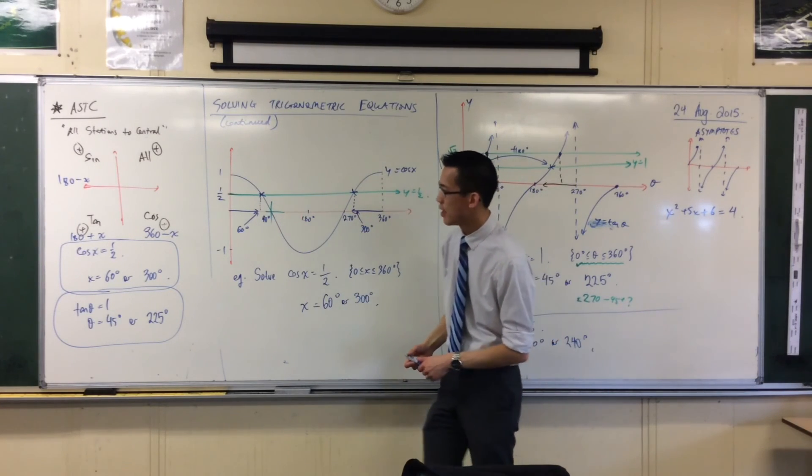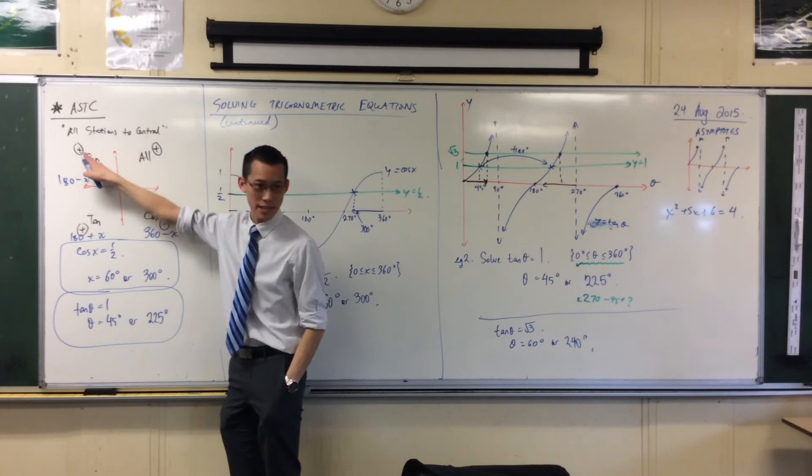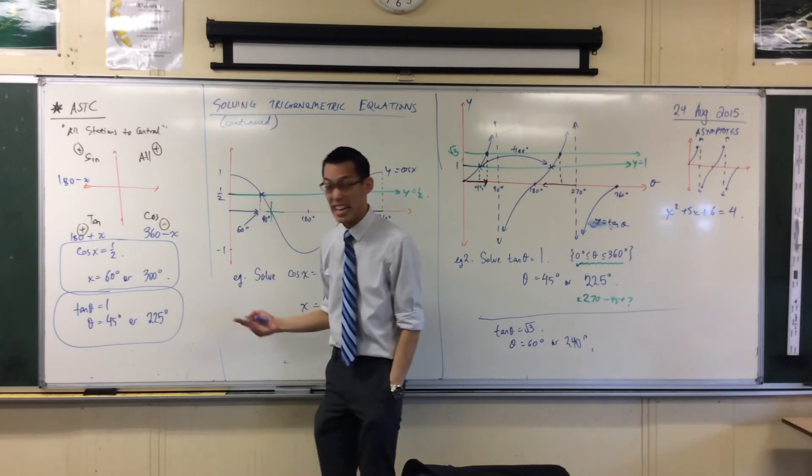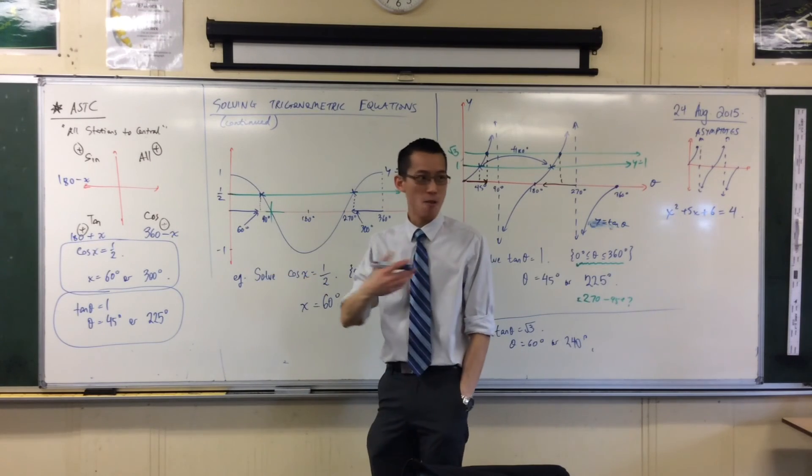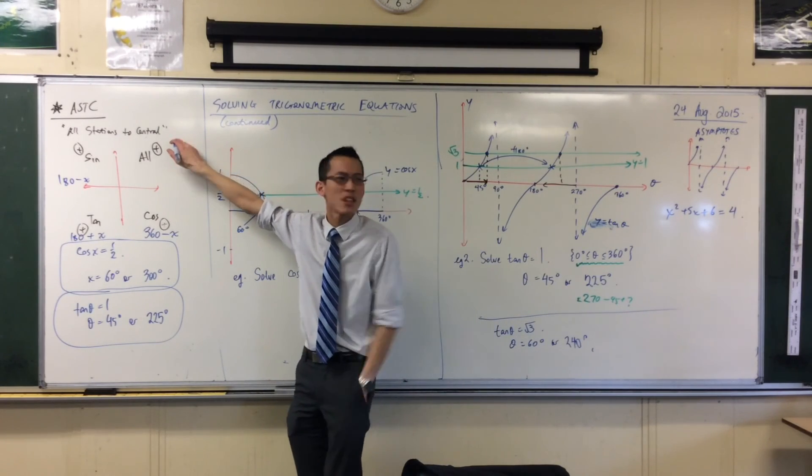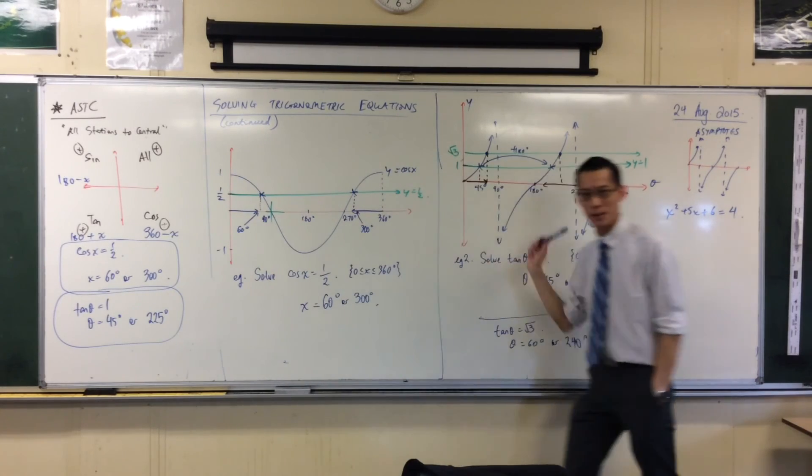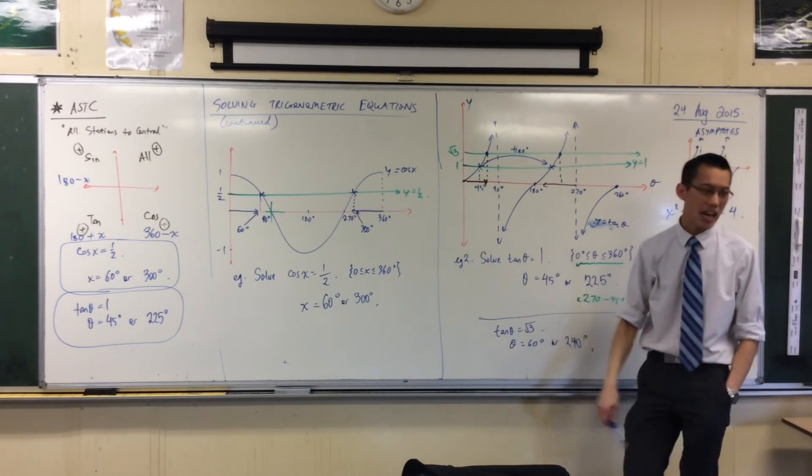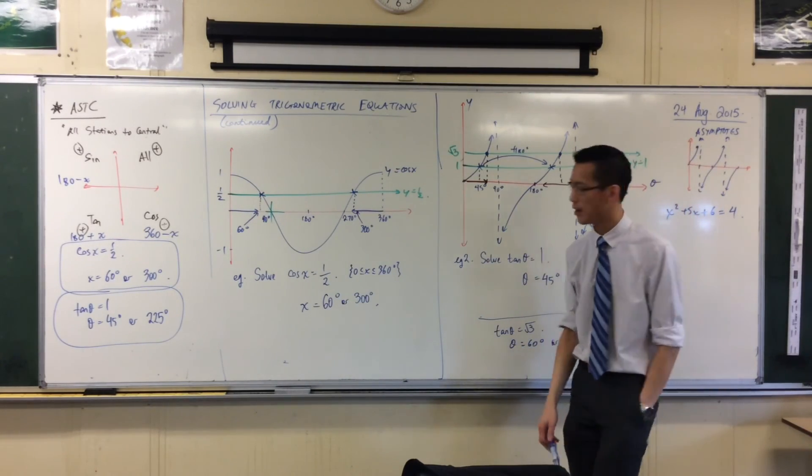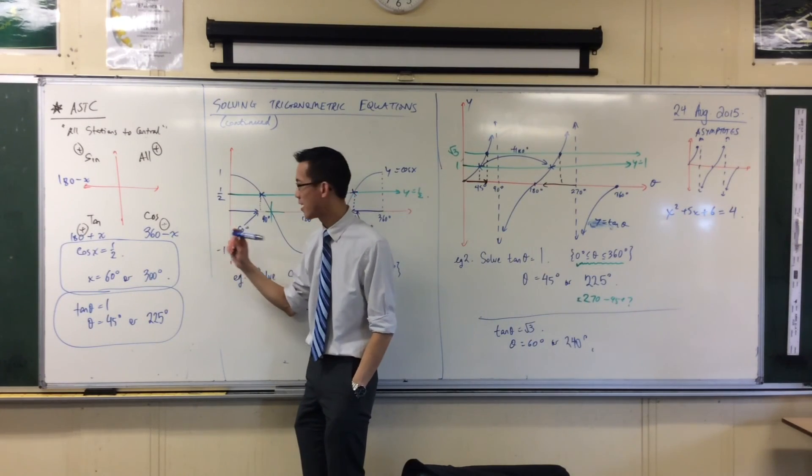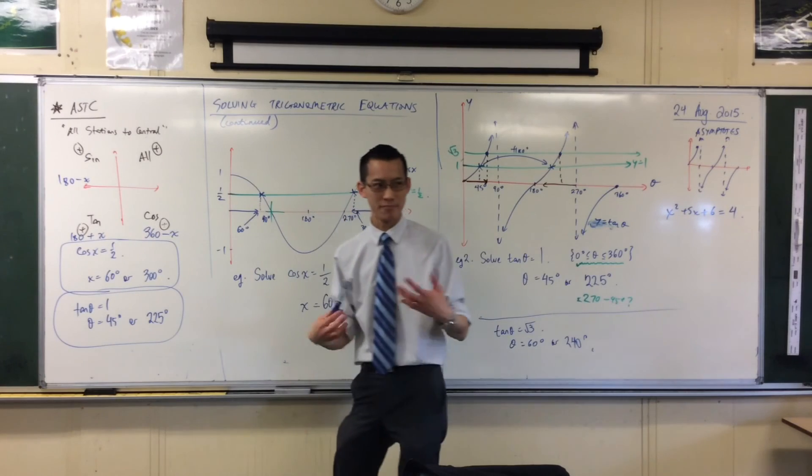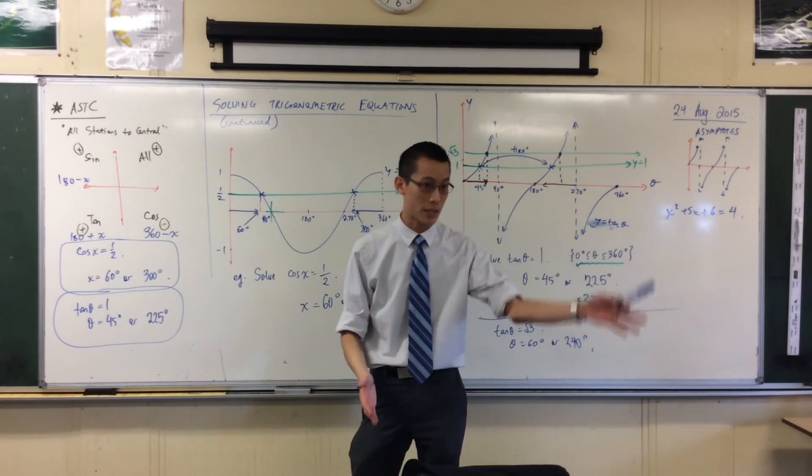The second thing is like, why is it this one, second or third or fourth quadrant? It's kind of black magic. It's like, why does it give me the right answer? Because all stations to central, right? That's not the real reason why. The real reason is because of these graphs. That's just kind of a helpful way of knowing. So this is quicker. It's like 10 times quicker. But it doesn't give you the understanding that you'll need to progress further.